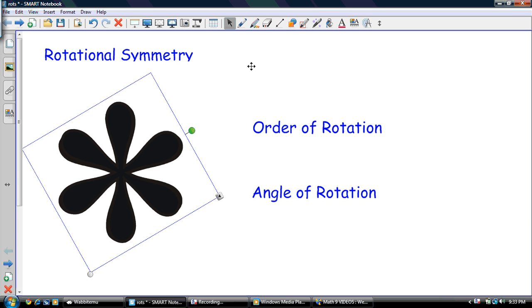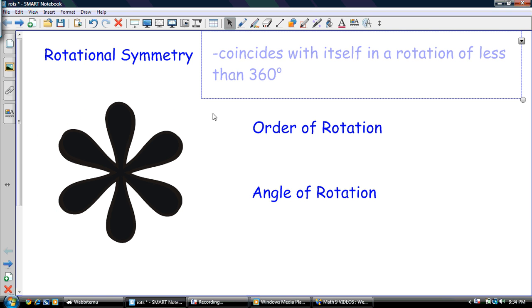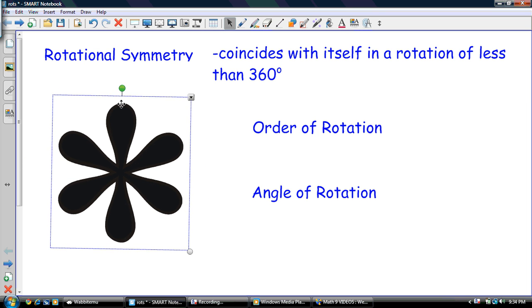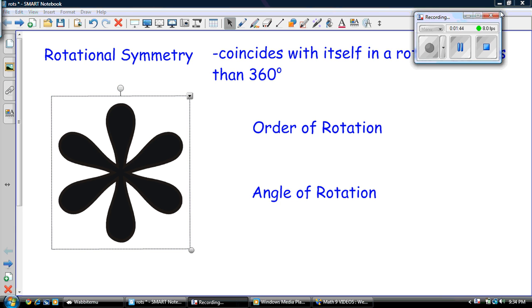So the definition of rotational symmetry in fancy terms is coincides with itself in a rotation of less than 360 degrees. So somewhere between 0 and 360 degrees, the object has to coincide with itself. The reality is that if it doesn't do it by 180, then there's a pretty good chance that it's not going to do it. So that's rotational symmetry—it coincides with itself in a rotation of less than 360 degrees.